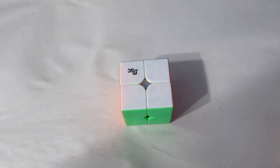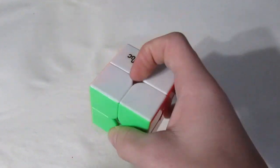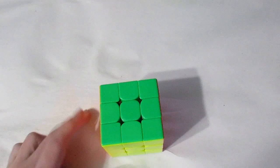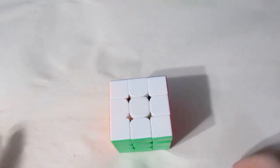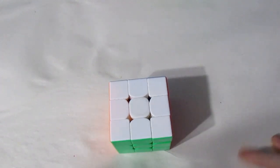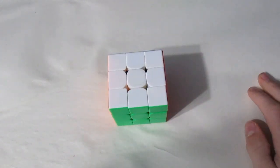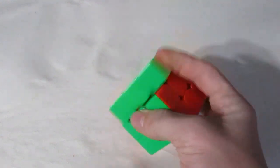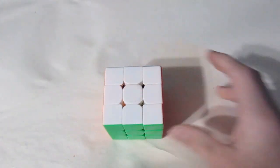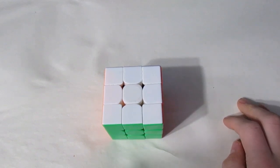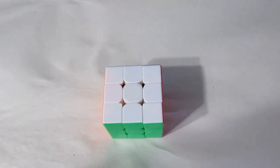For 3x3, the cube I always use—if you haven't watched my channel at all—this is a Cubicle Valk Power M. It's a great cube. I'm aiming for a sub-12 average and sub-11 single, but more for consistency.